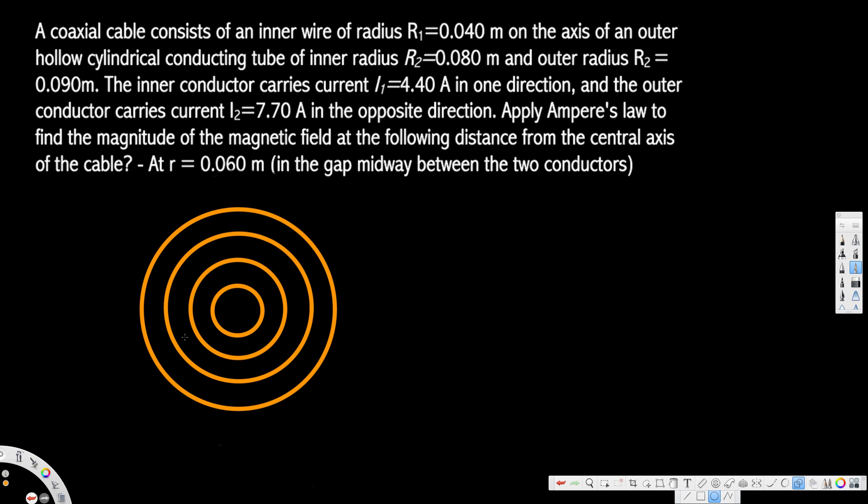The 0.06 m radius is the one we're interested in. To illustrate this better, we're going to put a dotted line that's going to be the Amperian circle.